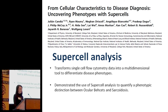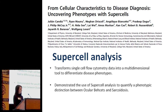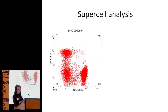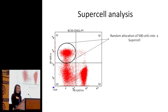We have collaborators over at the NIH in the U.S., and they've come up with this supercell analysis. What Julian came up with is a way to transform single-cell flow cytometry data into a multi-dimensional tool to differentiate disease types. He demonstrated that you could use this supercell analysis to quantify distinctions between ocular Bechet's and another inflammatory disorder called sarcoidosis. What supercell analysis does is take the data shown previously, gate on a population, and randomly allocate 500 of those single cells into one supercell.